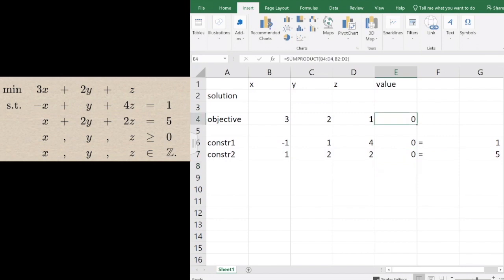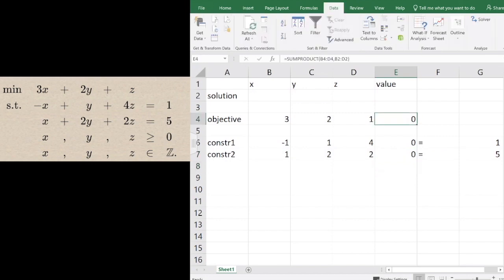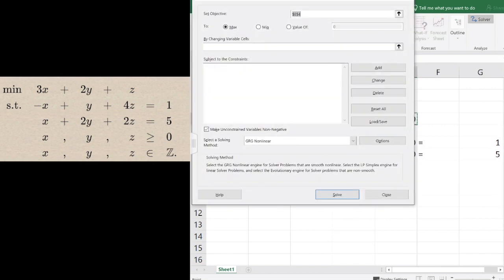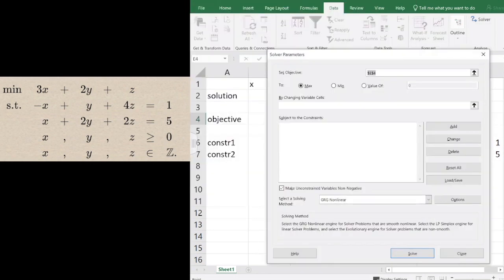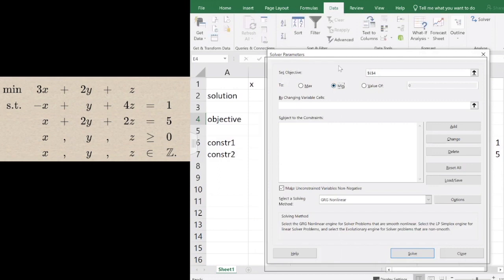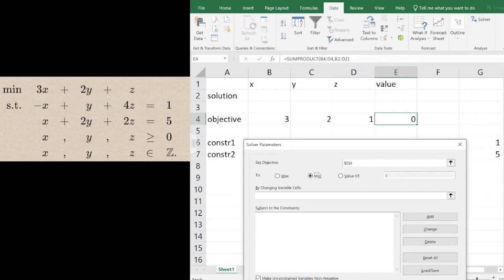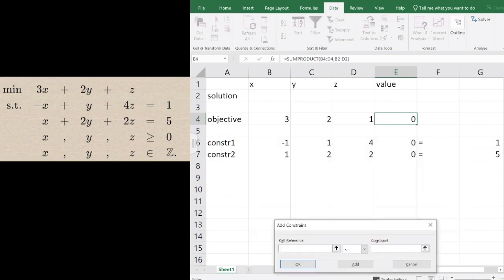Now we're ready to call the solver. Let's go to Data and click on Solver. The objective is to minimize cell E4 by changing cells B2 to D2 with the following constraints.